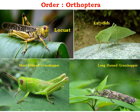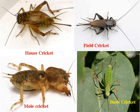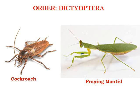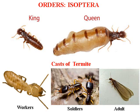Order Orthoptera includes locust and a catalyzed leaf-like structure, along with the longhorn grasshopper, shorthorn grasshopper, house cricket, field cricket, and bush cricket — many types of crickets from this same class. Order Dictyoptera includes the cockroach. Order Isoptera includes termites, which have a social system with workers and soldiers — a social insect living underground in the soil.